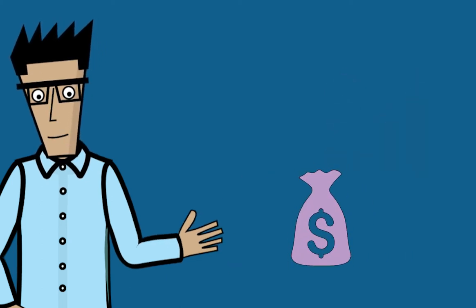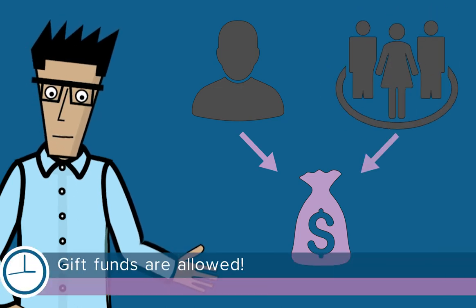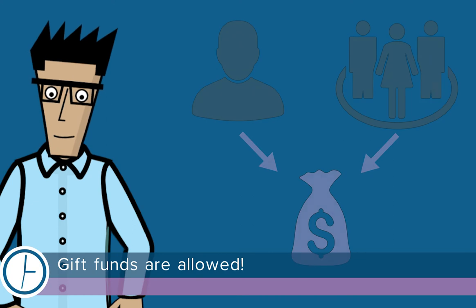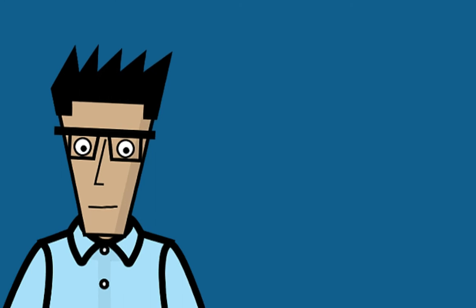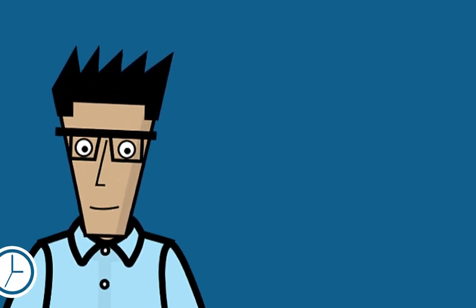The required down payment can come from a borrower's own funds or it can be gifted from an approved source as long as no repayment is expected. FHA's generous gift fund guidelines are a big win for first-time homebuyers looking to minimize their out-of-pocket costs.